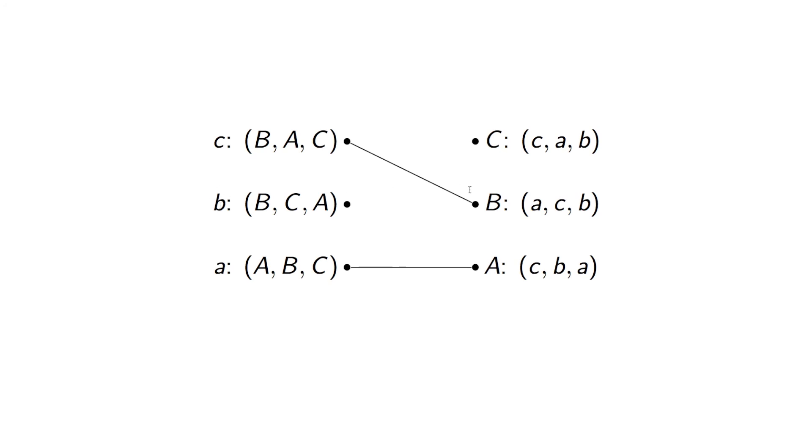And at this point, little B tries to match to big B, but is already matched. So, we remove big B from little B's preferences. And then we go again, and we have this matching there.